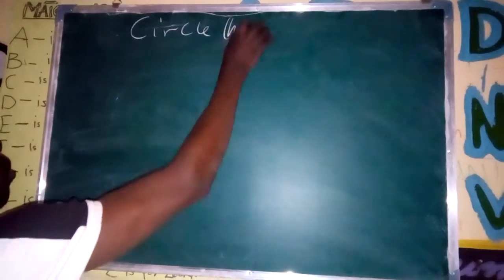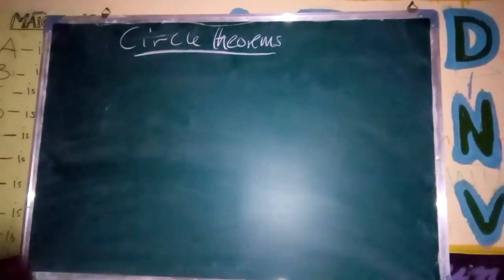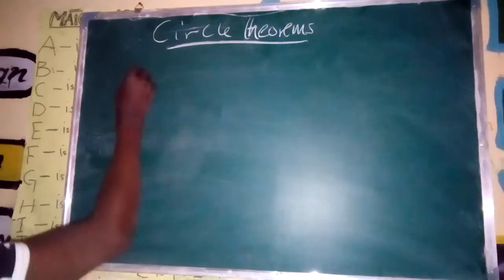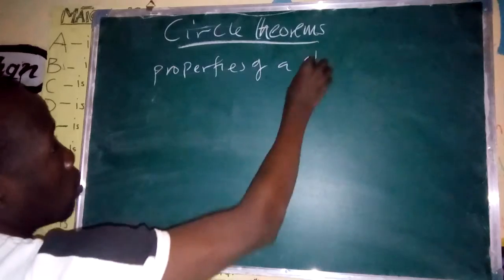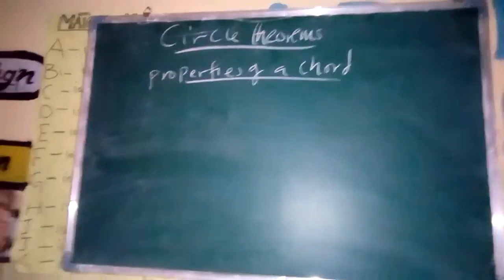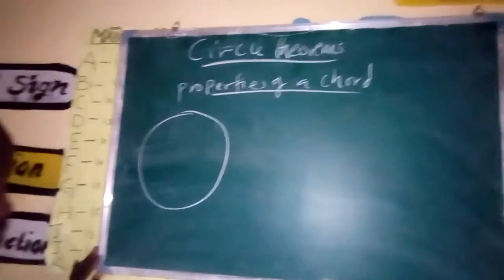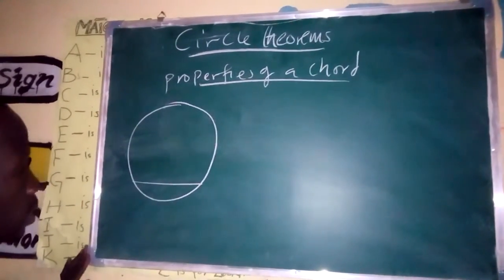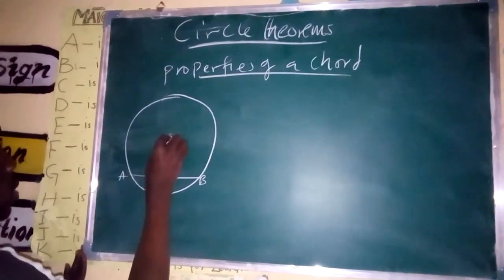In circle theorems, we will explain the properties of a chord. Let me write the properties of a chord. If we have a cycle, what is a chord? Let me show you what a chord is.